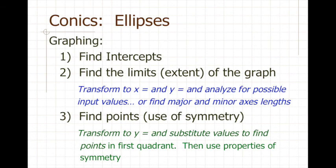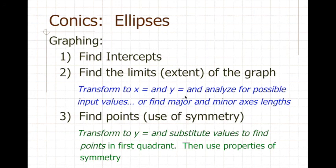Let's talk about graphing ellipses. There are really three things you need. First, find any intercepts — if your ellipse is centered at the origin, those intercepts also answer part two, which is finding the limits or extent of the graph. An ellipse lives within a rectangle, and the lengths and widths of that rectangle are the major and minor axes. If the ellipse is not centered at the origin, you can find the extent by transforming the equation into x-equals and y-equals forms and analyzing the resulting radical equation for possible input values.